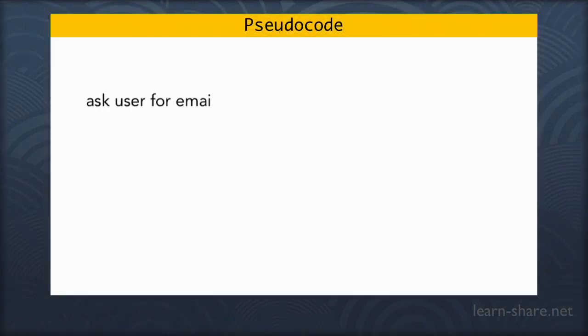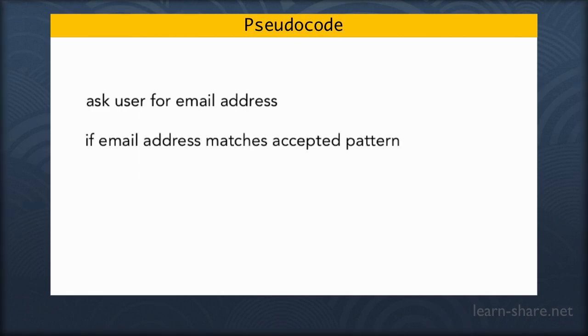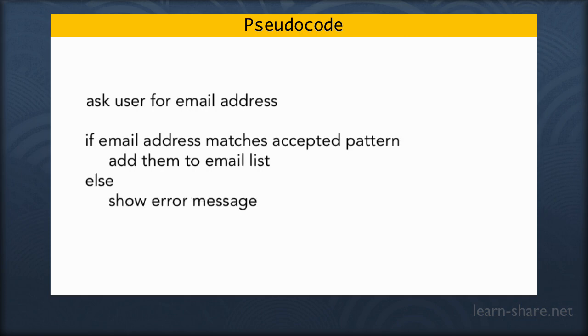On a whiteboard or paper we may write something like this: Ask user for email address. If email address matches accepted pattern, add them to email list. Else, show error message.